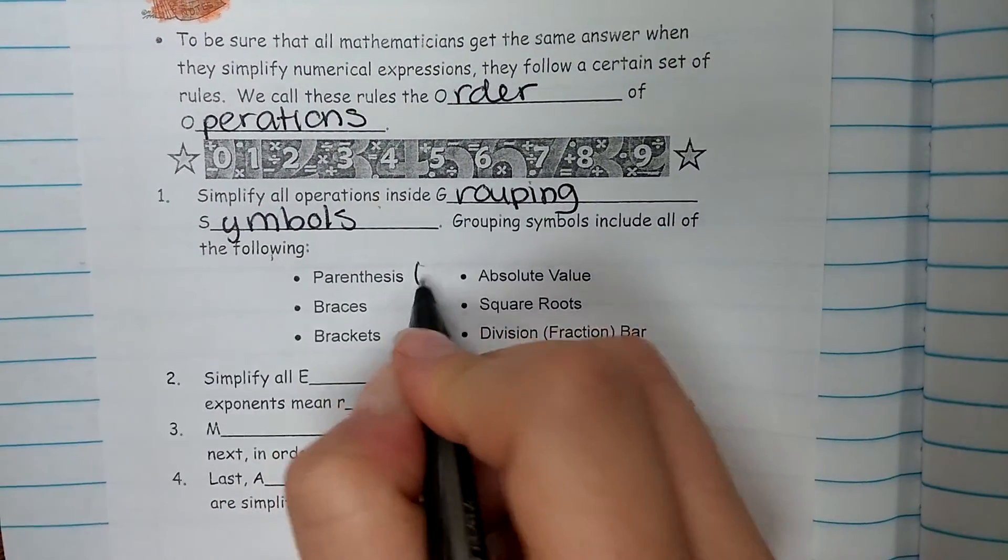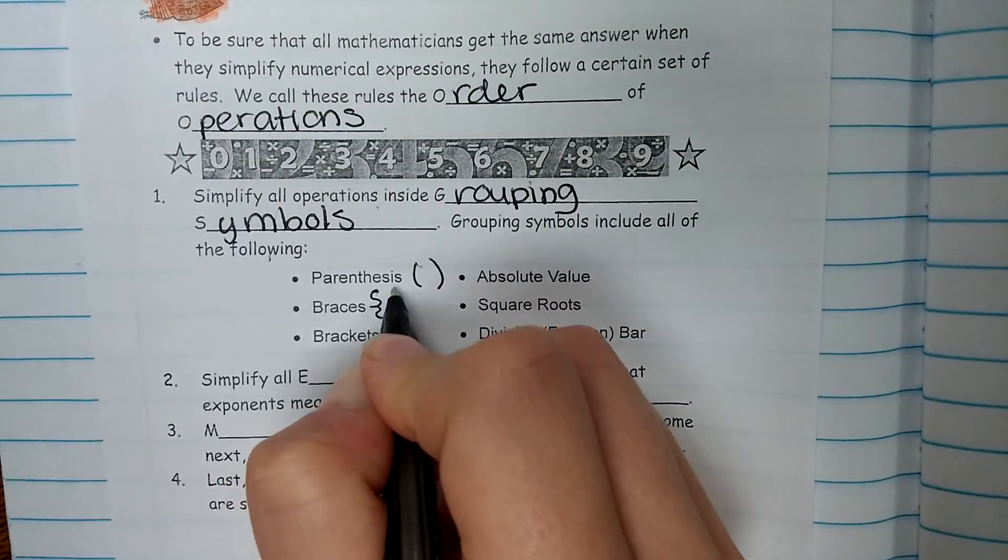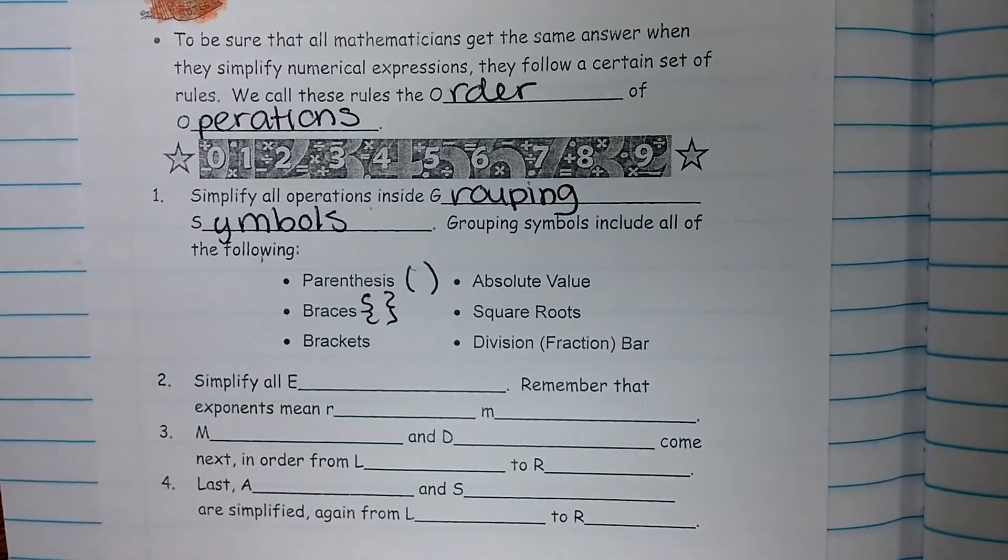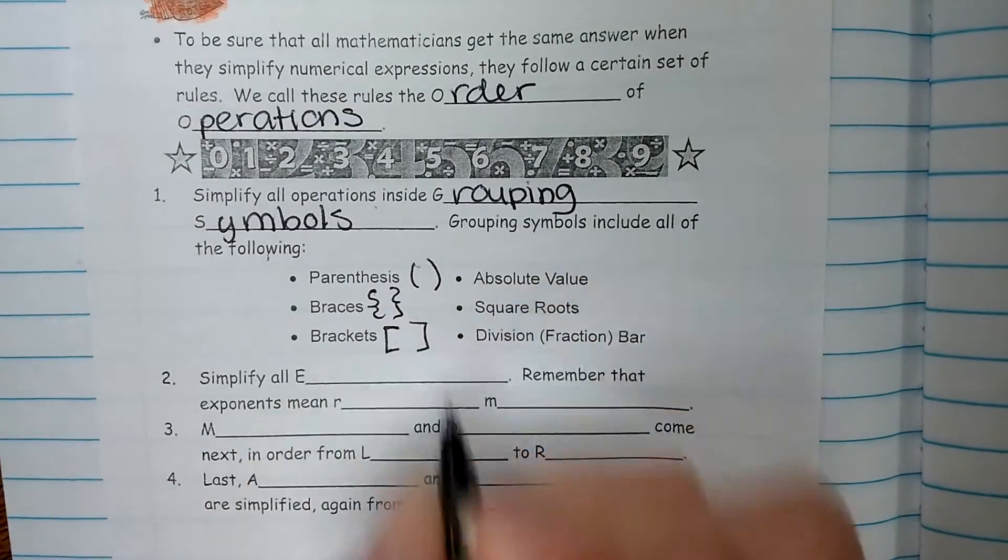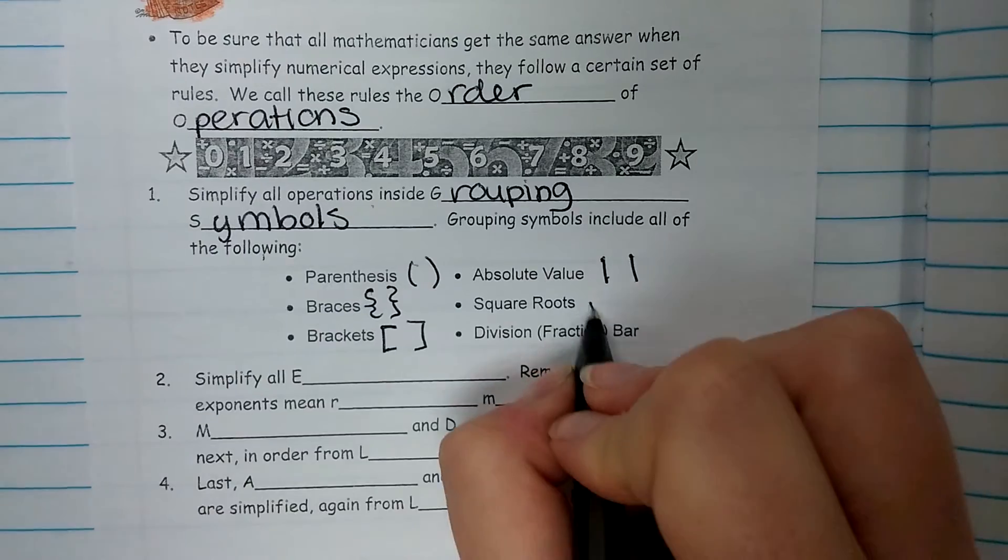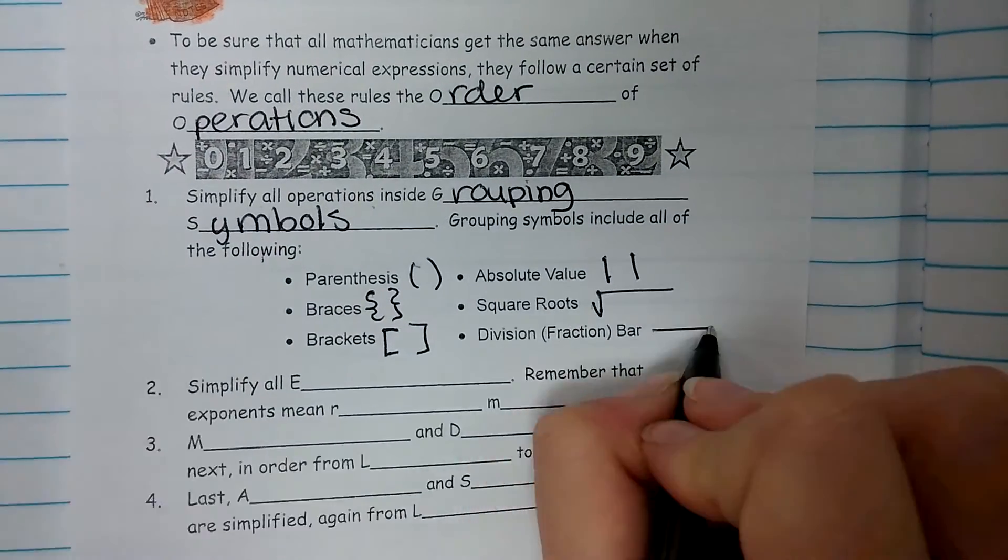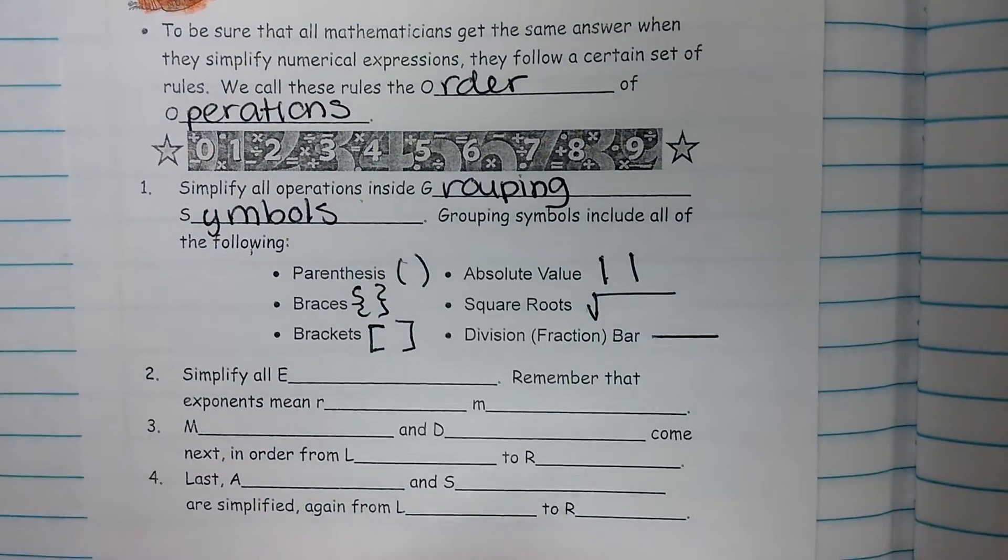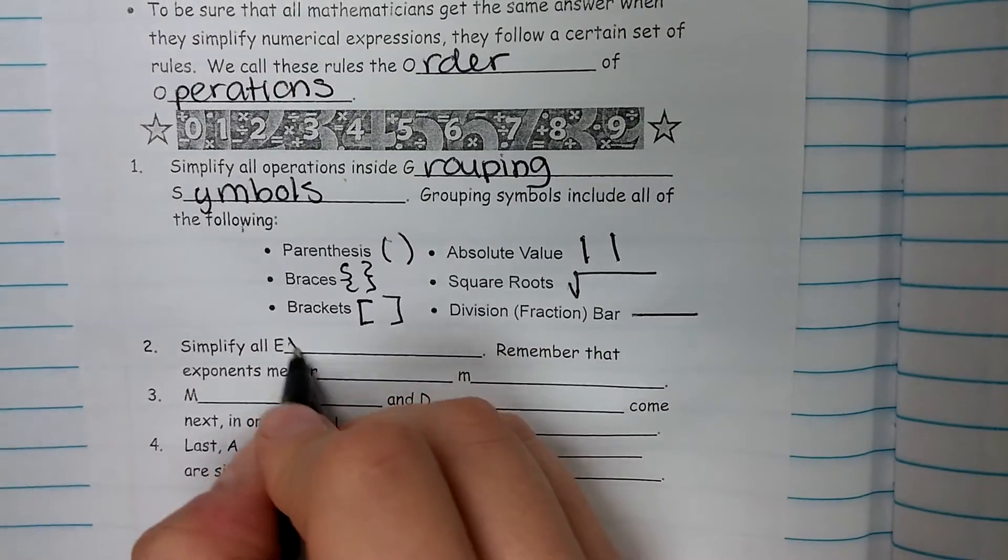First, parentheses. Braces, which are kind of wiggly parentheses. Brackets, which look like square parentheses. Absolute value, two straight lines. Square roots. And the fraction or division bar. Step two is to simplify all exponents.